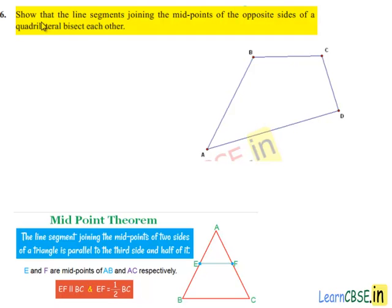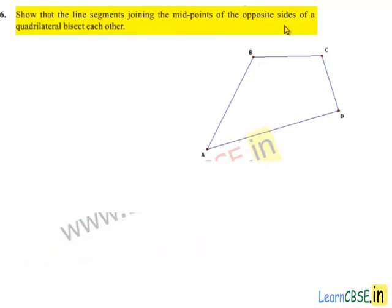Moving on to the sixth question: Show that line segments joining the midpoints of opposite sides of a quadrilateral bisect each other.